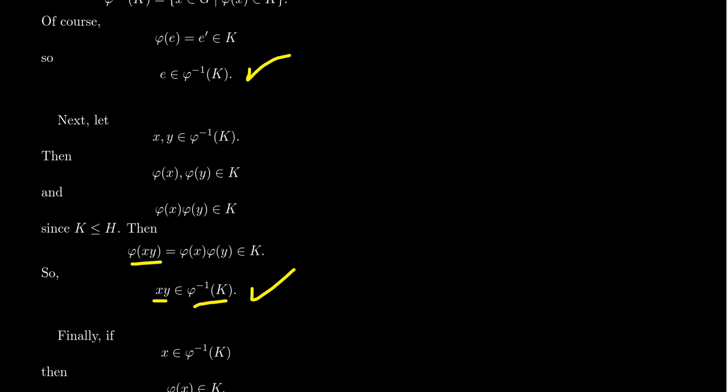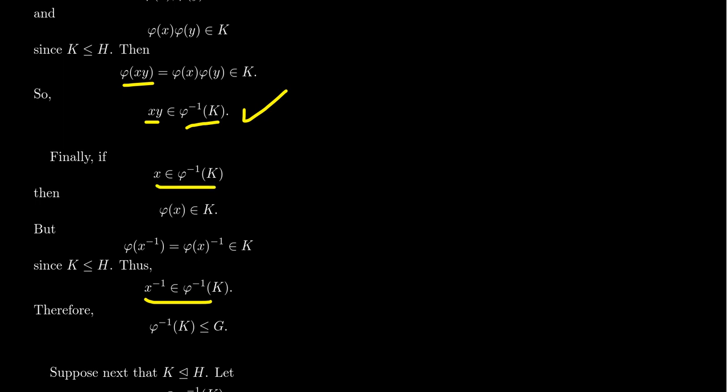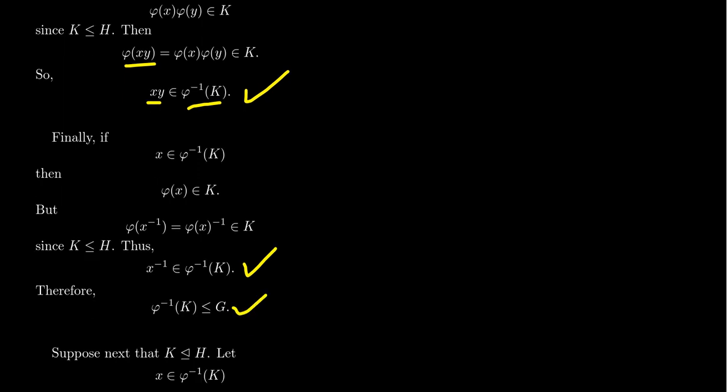We just need inverses to complete the subgroup proof. Let X be in the preimage of K, so phi of X is in K. The inverse of phi of X is phi of X inverse. Since K is a subgroup, the inverse of any element of K is in K, so phi of X inverse is in K, meaning X inverse is in the preimage of K. Since the preimage is closed under identity, multiplication, and inverses, the preimage of a subgroup is a subgroup of the domain.